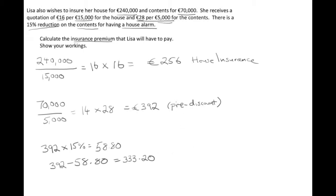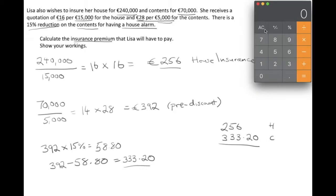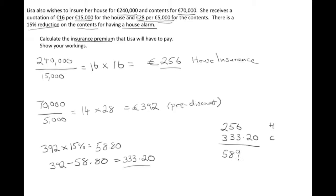Now what we have to do is add the two insurance costs — the house insurance and the contents insurance. So, 256 plus 333.20: that's the house and the contents insurance added together. 256 plus 333.20 gives us 589.20. And be sure, just to make sure the examiner can see that this is your final answer, by writing ANS equals. I sometimes put a line underneath too. And that's the question done.